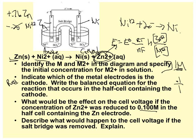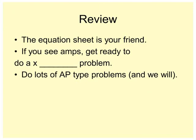Describe what happened to the cell voltage if the salt bridge is removed. Voltage goes to 0 because the electrons can't flow anymore. So the equation sheet is your friend. If you see amps, get ready to do times dividing problems and do lots of AP problem types, and we will. Talk to you later.